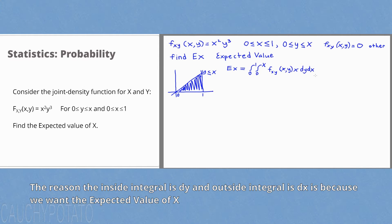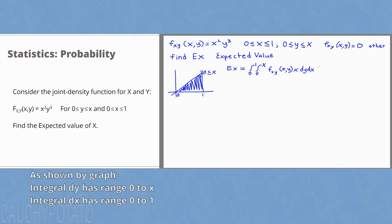We get the integral range 0 to 1 for outside integral dx because we are given 0 less than or equal to x less than or equal to 1. And the integral range 0 to x for the inside integral dy because we are given 0 is less than or equal to y less than or equal to x.